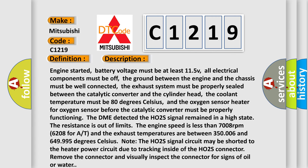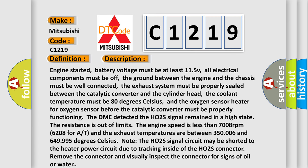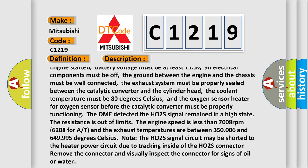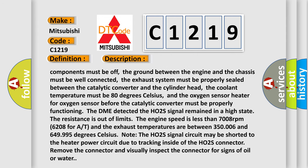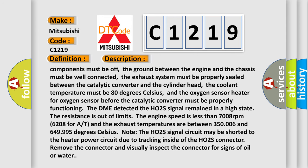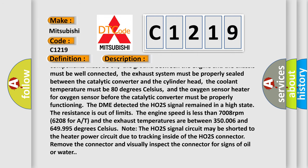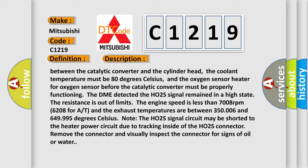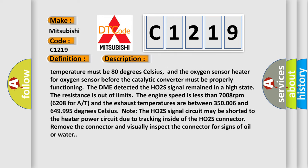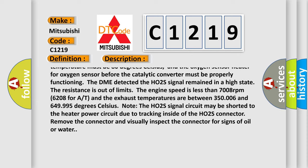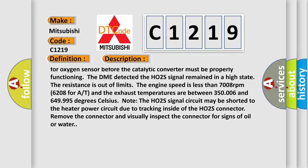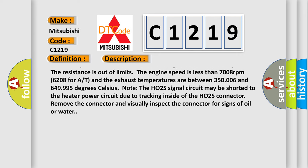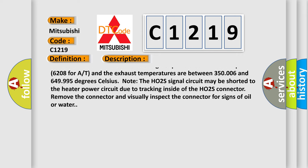Engine started, battery voltage must be at least 11.5 V, all electrical components must be off, the ground between the engine and the chassis must be well connected, the exhaust system must be properly sealed between the catalytic converter and the cylinder head, the coolant temperature must be 80 degrees Celsius, and the oxygen sensor heater for oxygen sensor before the catalytic converter must be properly functioning. When the DME detected the HO2S signal remained in a high state, the resistance is out of limits.